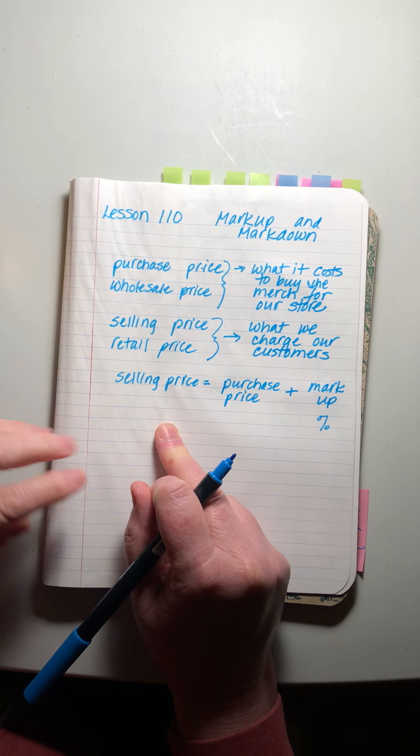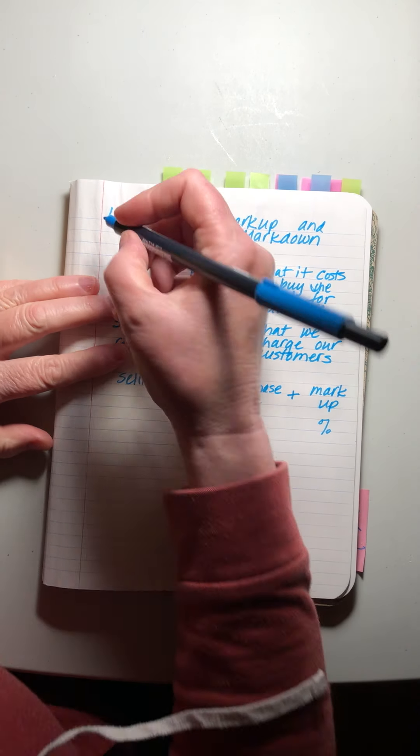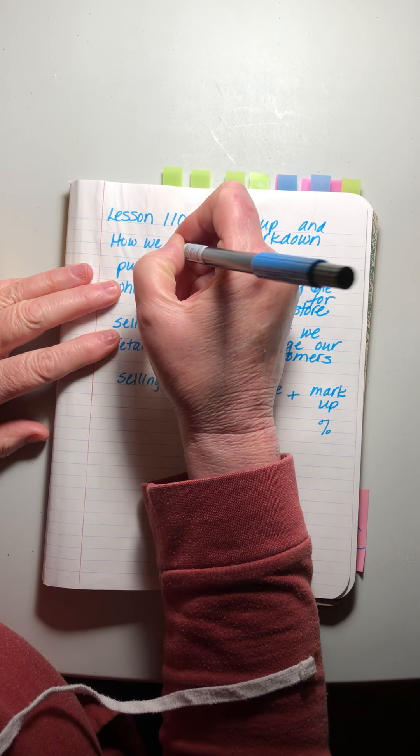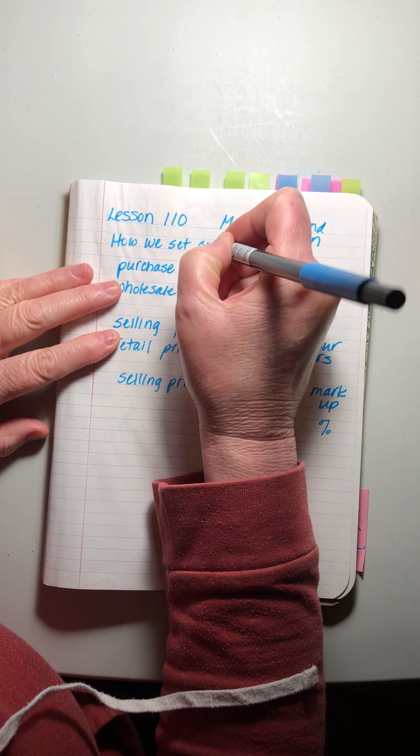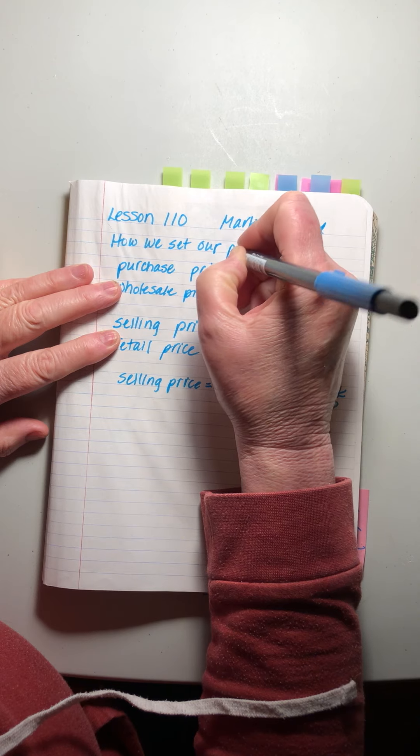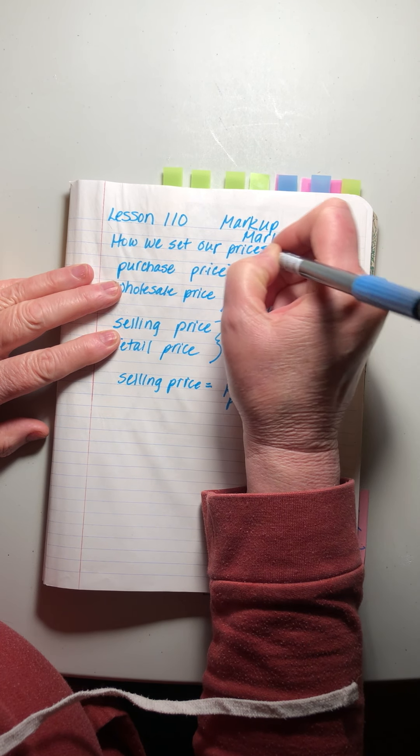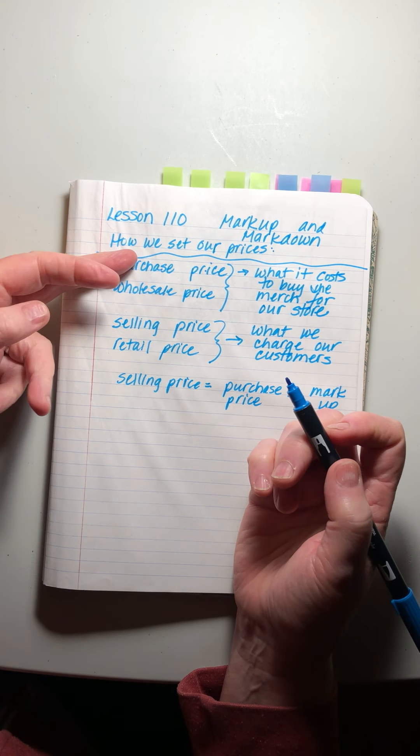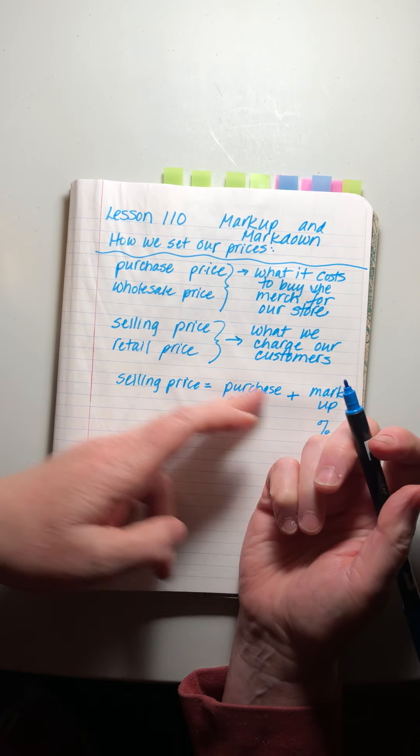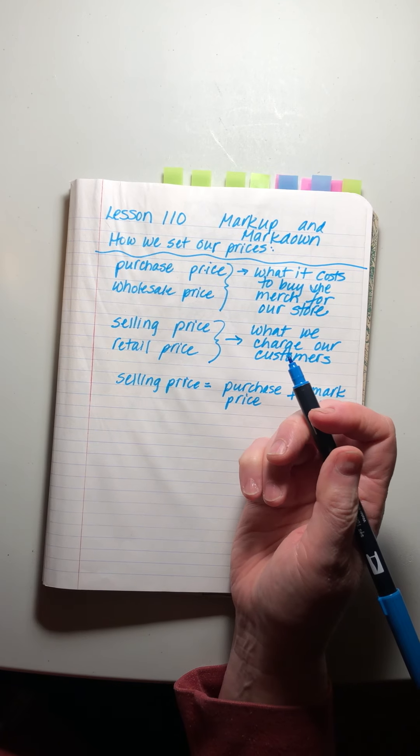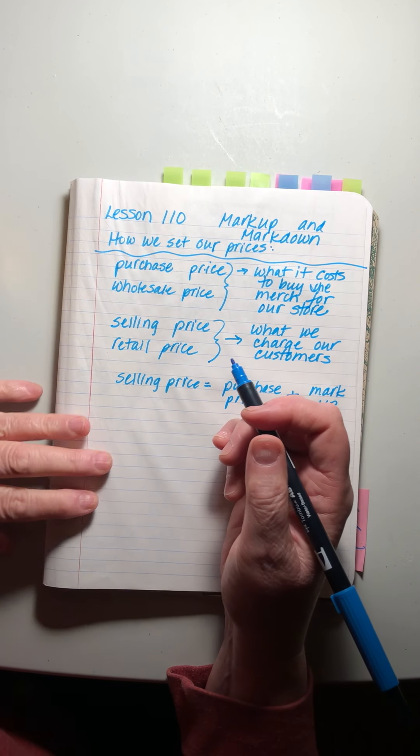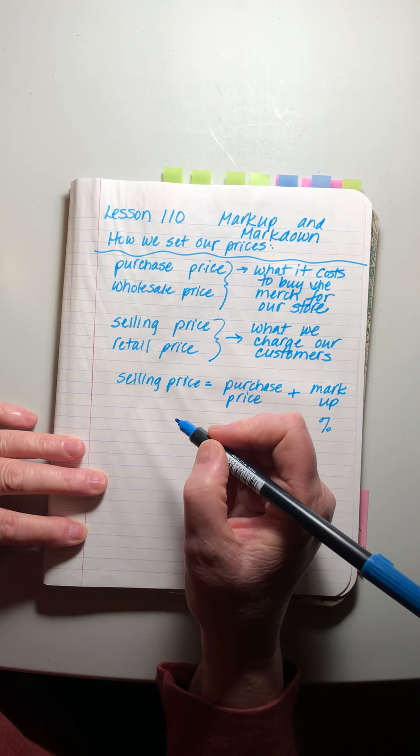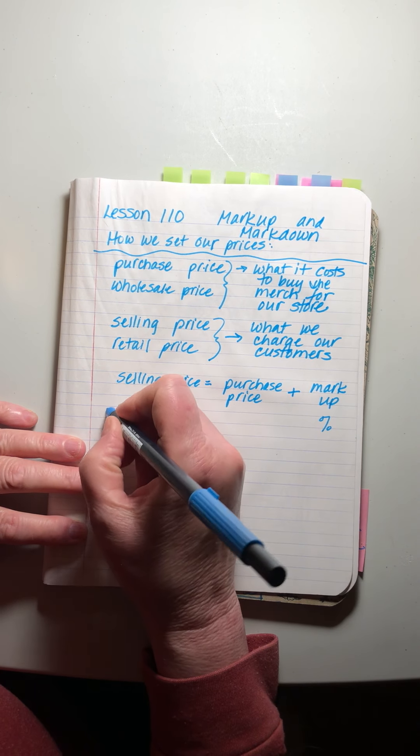That is how we set our prices. Now sometimes we have merchandise - we buy it, we calculate a markup, we determine the selling price, we put it on the floor, we leave it there for a while, and you know it always happens that some things just don't sell.